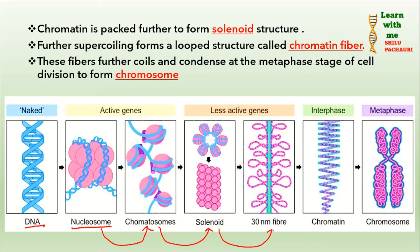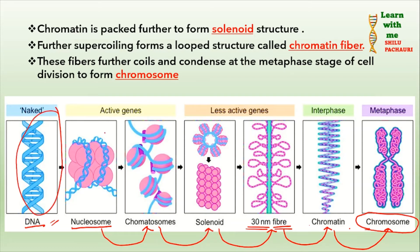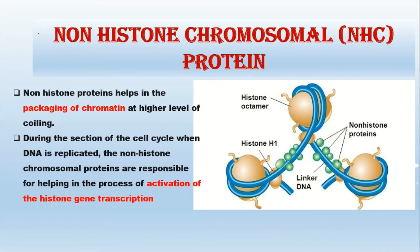The nucleosomes further coil to make the beads-on-a-string structure, known as chromatosomes. These chromatosomes further coil to make a solenoid structure, and further coiling produces fibers that are around 30 nanometers in diameter. These fibers become more condensed to form chromatin, and during cell division at the metaphase stage they condense further to form chromosomes. This is how the DNA and protein molecules combine and condense to make the structure of a chromosome.